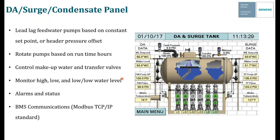This is the split tank screen — one panel controlling two different tanks. You have a DA tank on the left and a surge tank on the right. Here's that four-to-two configuration: four feed water pumps and two transfer pumps. Pump one and pump two — lead and lag one — are commanded on to feed the boilers, while both transfer pumps are on, moving water from the surge tank into the DA tank. On the left side you have all DA data: water level set point, actual water level, feed water pressure set point, and actual feed water pressure. On the surge data side, you have water level set point, actual water level, transfer pump pressure set point, actual transfer pump pressure, and water temperature.